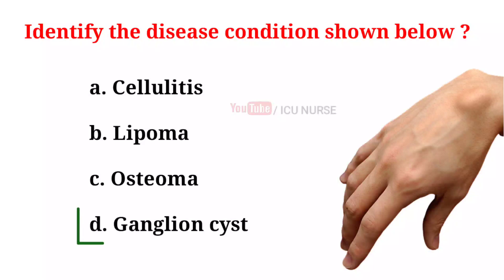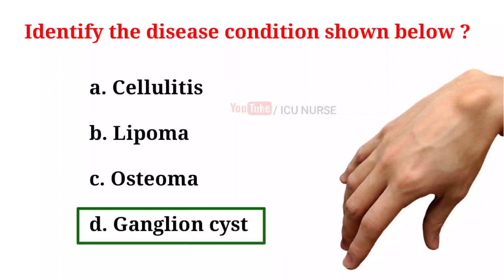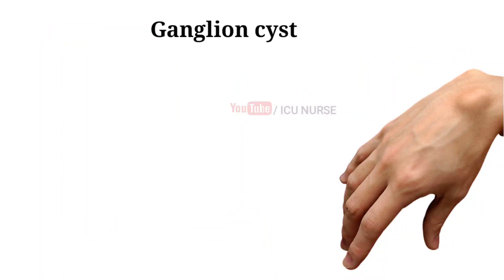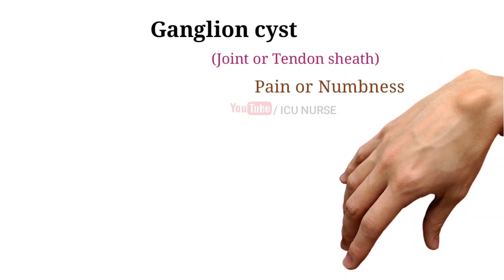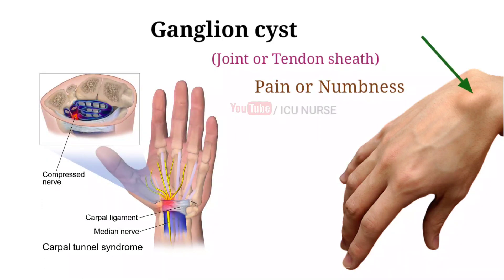D. Ganglion cyst. A ganglion cyst is a fluid-filled bump associated with a joint or tendon sheath. They most often occur at the back of the wrist, followed by the front of the wrist. Onset is often over months. Typically there are no further symptoms. Occasionally pain or numbness may occur. Complications may include Carpal Tunnel Syndrome.